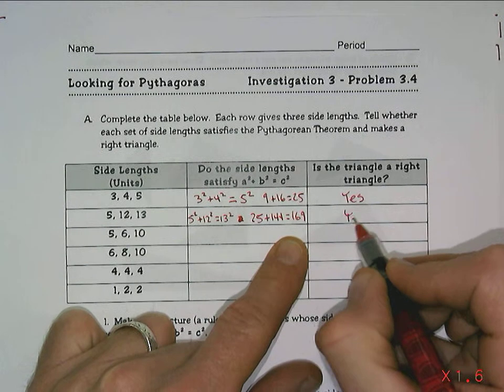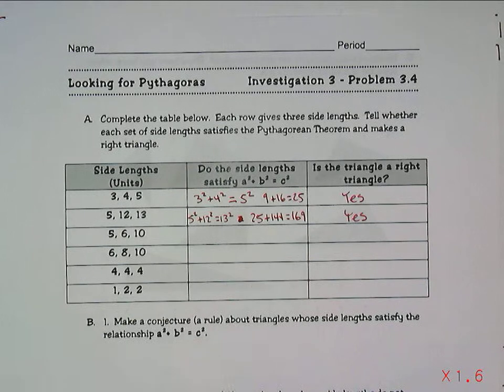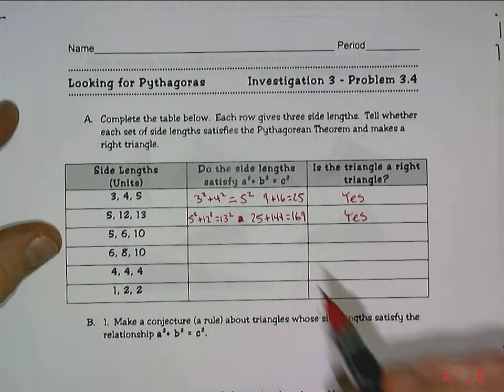25 plus 144 does equal 169, so the answer is yes, it has to be, it is a right triangle. If we were to actually build it, it would have a right angle in it.